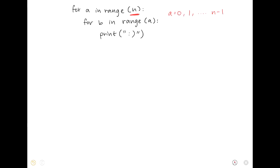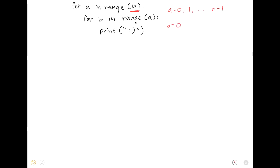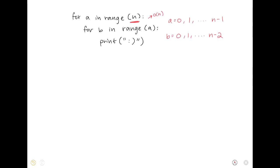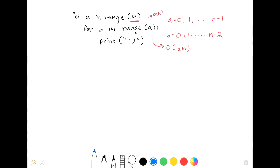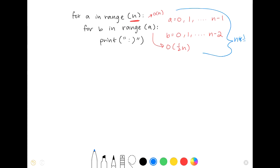So we can say that the values of b are 0, 1, blah, blah, blah, blah, up to n minus 2, because it doesn't include n minus 1. Because of this, we can say that on average, the inner loop runs 1 half n times. Thus, the Big O of the entire loop is, you end up with n times 1 half n, which gives O of 1 half n squared, which then equals O of n squared.